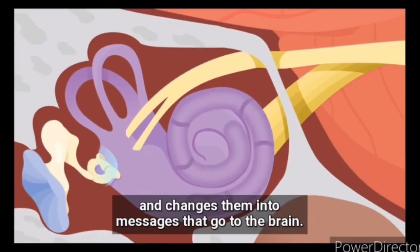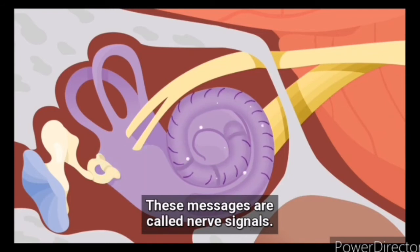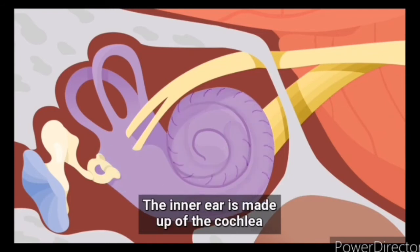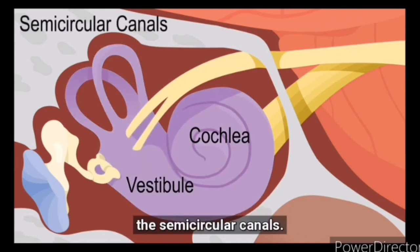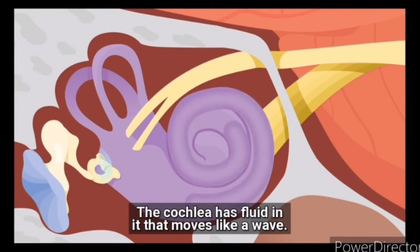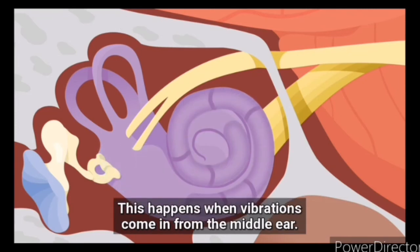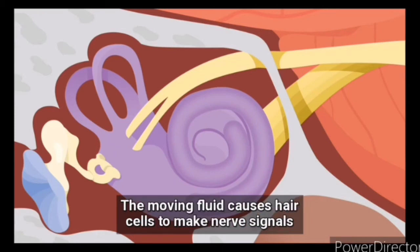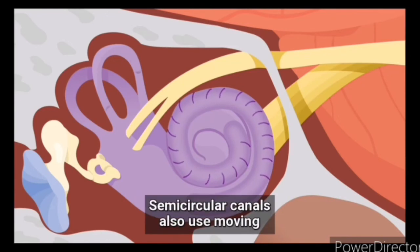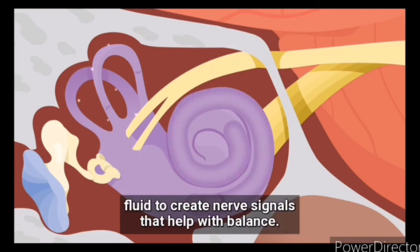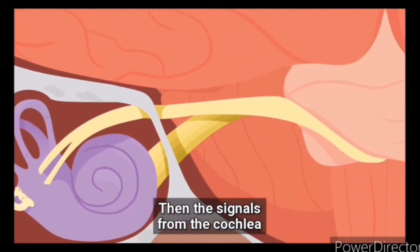The inner ear receives vibrations and changes them into messages that go to the brain — these messages are called nerve signals. The inner ear is made up of the cochlea and vestibule, which includes the semicircular canals. The cochlea has fluid in it that moves like a wave when vibrations come in from the middle ear. This moving fluid causes hair cells to generate nerve signals about sound. The semicircular canals also create nerve signals that help with balance.